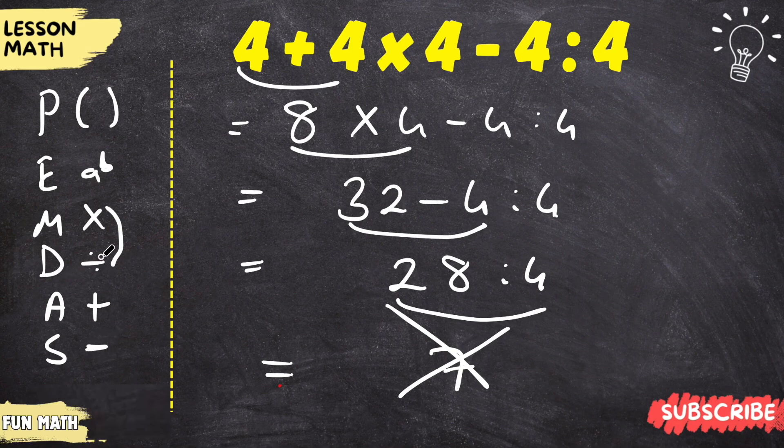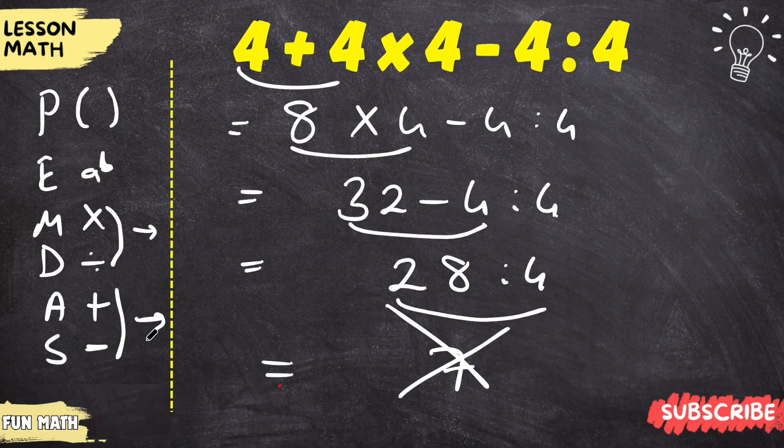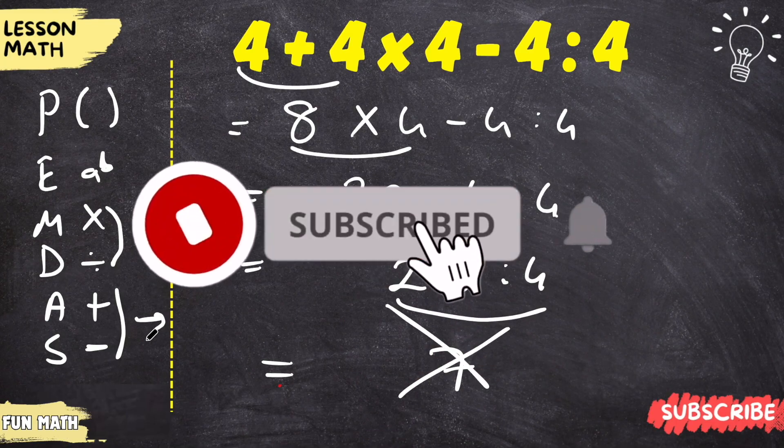Multiplication and division have no order among them. They are done from left to right. Addition and subtraction also have no order among them. They are done from left to right. Let's apply this rule to the question immediately.